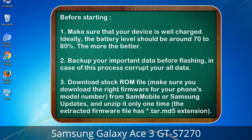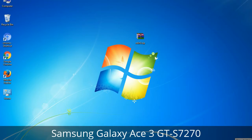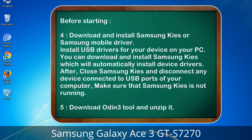3. Download the stock ROM file. Make sure you download the right firmware for your phone's model number from Sammobile or Samsung Updates, and unzip it only one time. The extracted firmware file has a *.tar.md5 extension. 4. Download and install Samsung Kies or Samsung mobile driver to install USB drivers for your device on your PC. After installation, close Samsung Kies and disconnect any device connected to USB ports — make sure Samsung Kies is not running. 5. Download the Odin 3 tool and unzip it.